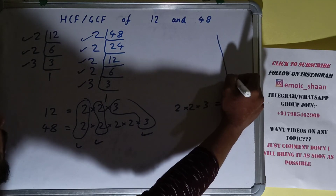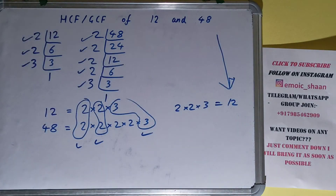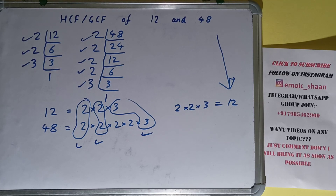So you can say that the HCF or the GCF of the numbers 12 and 48 is 12. So this is all. If you found the video helpful, please hit the like button, do consider subscribing, and thanks for watching.